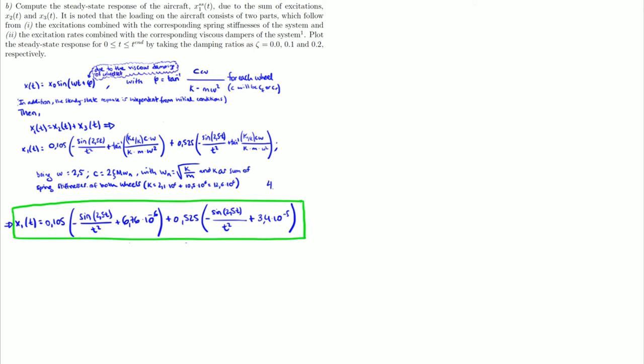In the second part of the exercise, they ask us to compute the exterior response of the aircraft X1 as the sum of the excitation X2 and X3 that we already solved in the last part, for the time when it is bigger than 0 and smaller than 5 seconds, and take into account the damping ratios 0.0, 0.1, and 0.2. As it is shown, there are many equations taking into account both the viscous damping of wheelset and the excitation of wheelset, in order to bring up the equation that is squared in green. There is also shown the graph of the equation squared in green. We can see that it is a damped movement that will reach rest at some point of t.